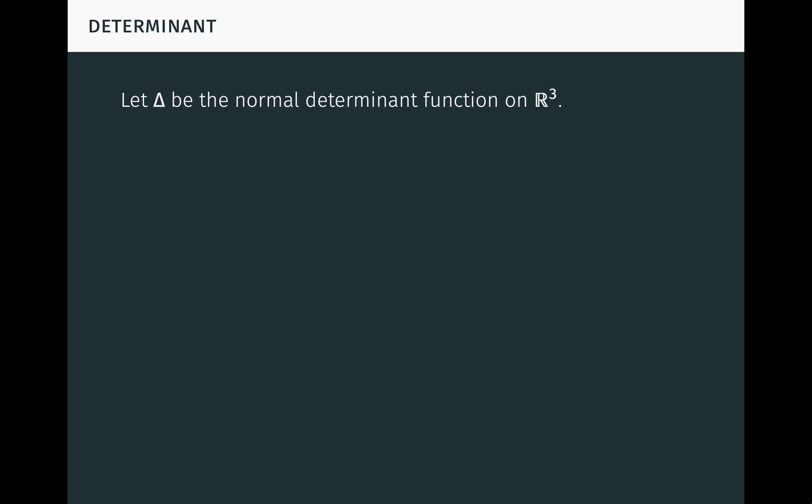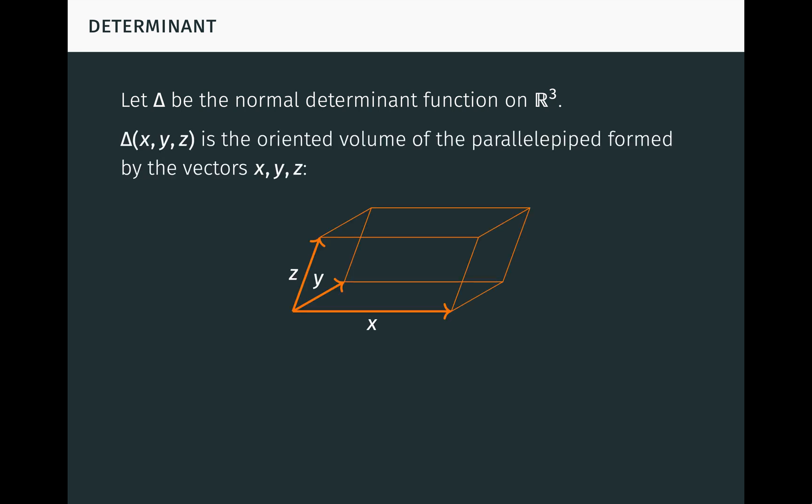With that out of the way, let delta be the normal determinant function on the oriented space R3. In my video on determinants and volume, I showed that delta of x, y, z measures the oriented or signed volume of the parallelepiped formed by the vectors x, y, and z, as seen here. Delta being normal means that delta of e1, e2, e3 equals 1. This implies that delta assigns the oriented volume 1 to any positively oriented unit cube, which is a natural condition.